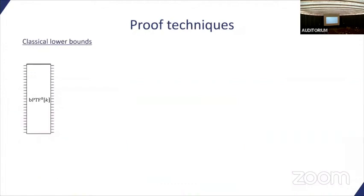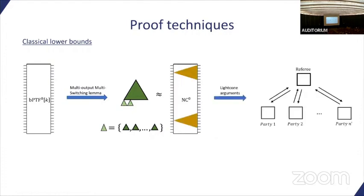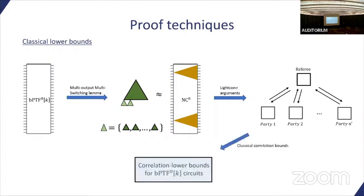Now we need to show that bounded polynomial threshold function circuits cannot solve this problem. We start with our circuits. We apply a multi-output multi-switching lemma to reduce them to decision trees, a set of decision trees. It's a set because each one of the decision trees computes one of the output bits. This is known to be equivalent to NC0 circuits. For those, we can use light cone arguments. With light cone arguments, we can reduce this NC0 circuit to a non-local game over a subset of the inputs we started with. For this non-local game, because it's this generalized Mermin game, for example for the parity halving problem, we can use classical correlation bounds that we have for the winning strategies, and we get correlation upper bounds for our circuit class. Our main contributions are defining the multi-output switching lemma for this new circuit class, then defining the new non-local games, the optimal winning strategies, classically and quantumly.